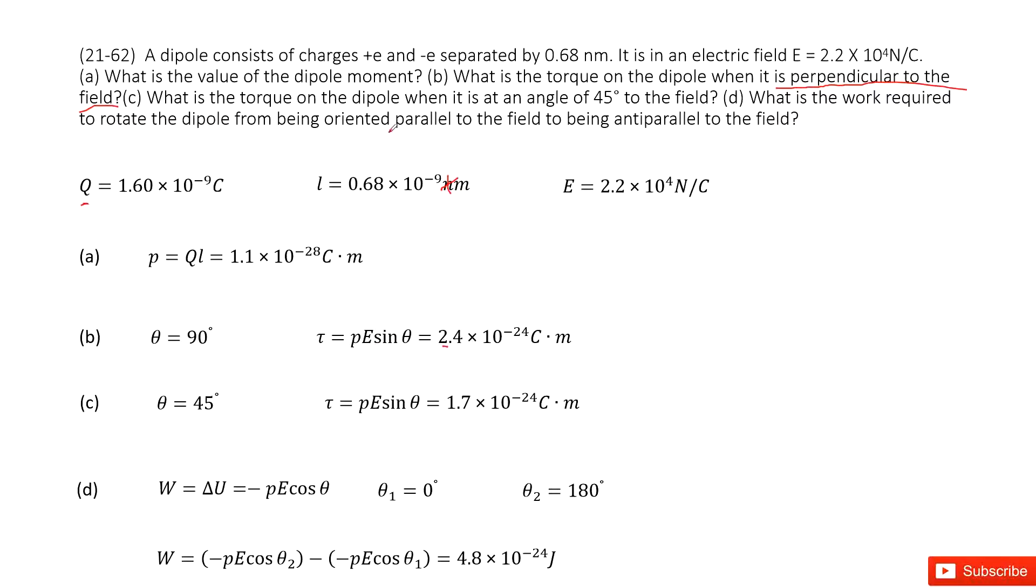The next one tells you we still need to find the dipole torque. But this one, there is an angle of 45 degrees to the field. So in this case, we write down theta as 45 degrees and input known quantities, get the answer there.